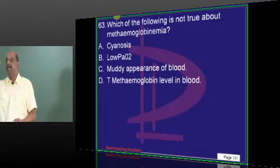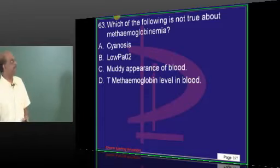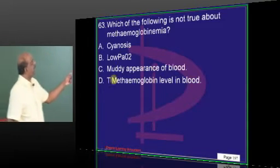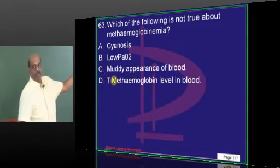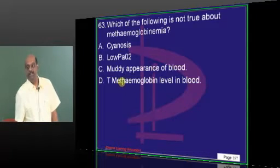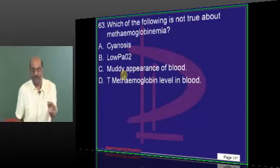Methemoglobinemia. If you get the right answer, you got the concepts of physiology. Think that it is increased methemoglobin. So what is your answer? Excellent. PAO2, SAO2. There's a lot of difference between these two.